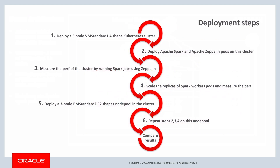This is what our deployment flow is going to look like. We will start by creating a three-node Kubernetes cluster with VM standard 1.4 shape instances using the OCI console. Then we will deploy Apache Spark and Zeppelin pods and measure performance by running Spark jobs. After that, we will scale the Spark worker pods and measure performance again. At that point, we will add another node pool of three BM standard 2.52 shape nodes to the same cluster and repeat steps 2, 3, and 4. Finally, we will compare the performance of both node pools and draw inferences.